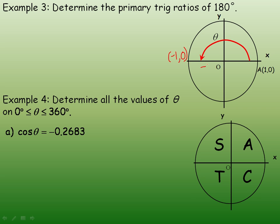The adjacent side is negative 1. The height here — there is no height at all — so the opposite side would be 0. And the length of the hypotenuse here would be 1. So that's the hypotenuse. This negative 1 is the adjacent side, and the 0 is the opposite side, because the triangle has no height at all.